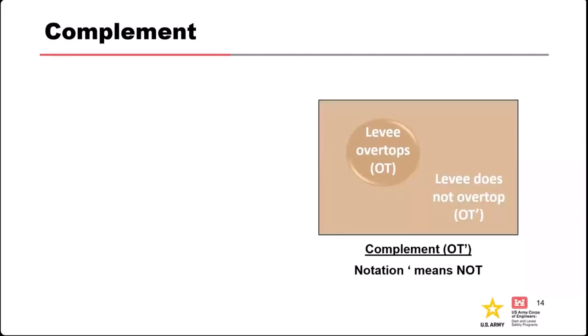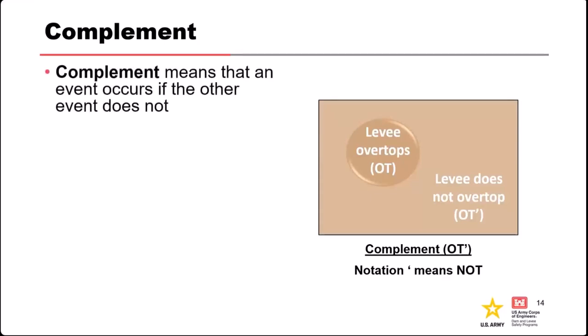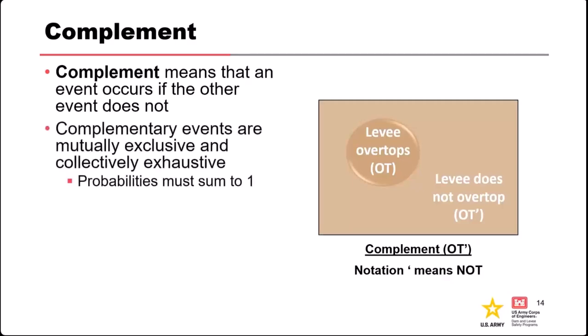The next type of relationship between events is complement. There are different notations — the apostrophe is one you'll see — and that notation basically means 'not.' Complement basically refers to an event that does not occur. A property of complementary events is that by definition they're mutually exclusive — you can't have something occur and not occur at the same time — and they're collectively exhaustive, meaning either it occurs or it doesn't.